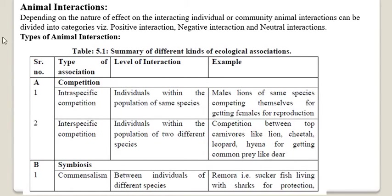Depending on the nature of effect on the interacting individual or community, animal interactions can be divided into different categories: positive interaction, negative interaction, or neutral interaction. Positive interaction is when no one is at harm and either both or one is at benefit. Negative interaction is when one or both animals are at harm, like competition. Neutral interaction is when none is at benefit and none is at harm.